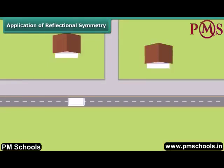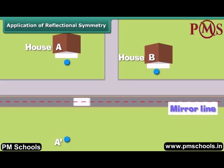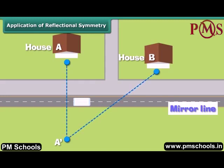A milkman wants to park his van at some point on a street and distribute milk to houses A and B. Can you suggest where he should park his van so that his walking distance from the street to houses A and B will be the least? We can use reflectional symmetry here. Let A' be the image of A in the mirror line, which is the street. Join the points A' and B. At the point where the mirror line and A'B meet, that point is the ideal place for the milkman to park his van.